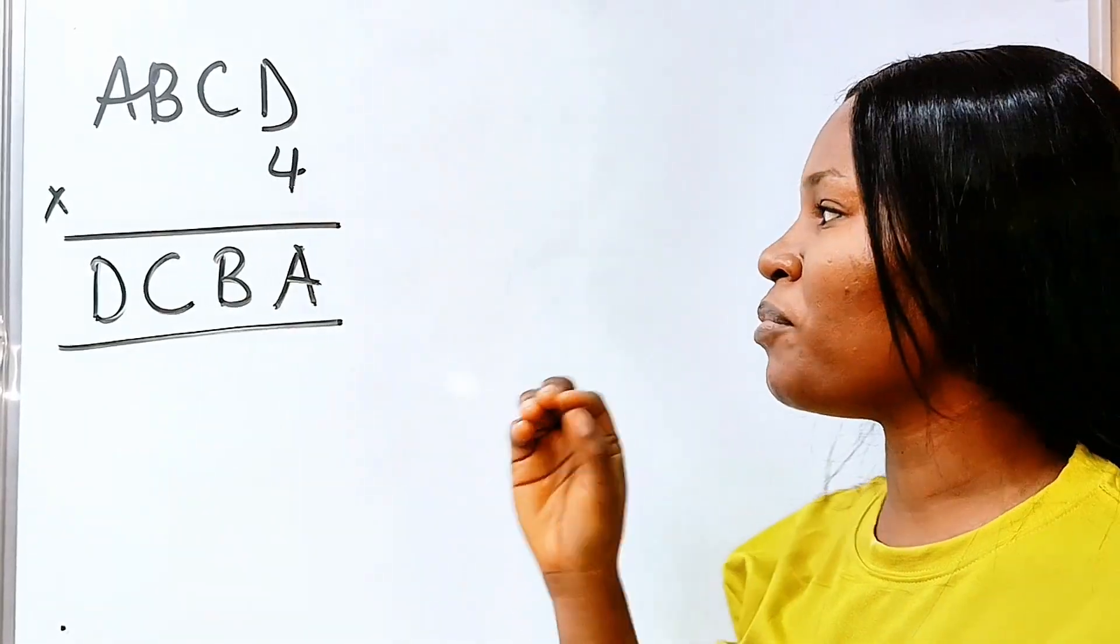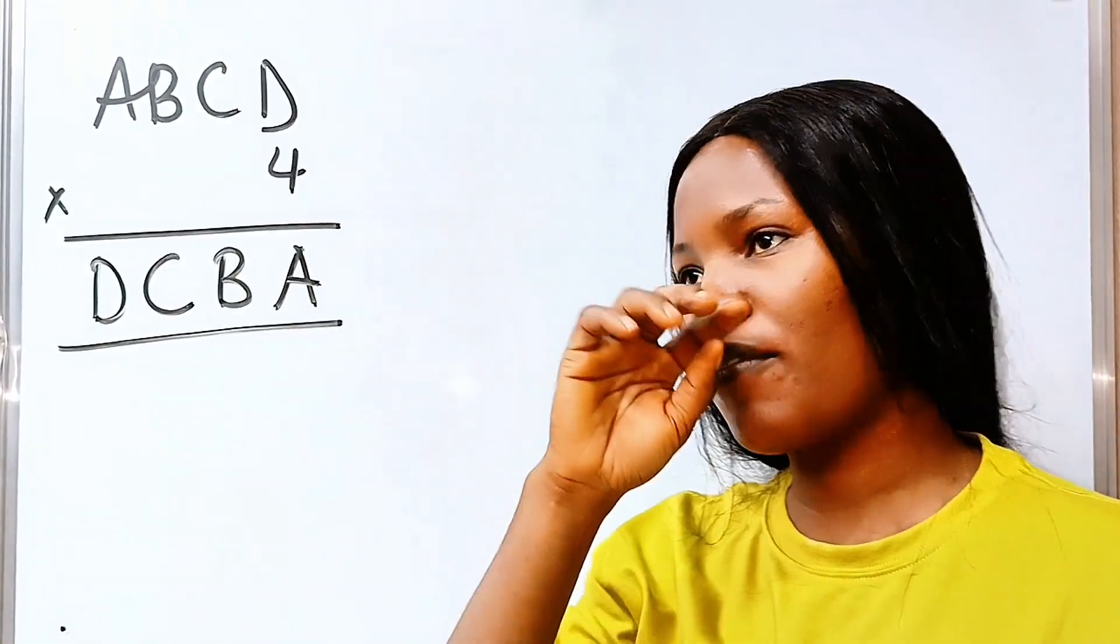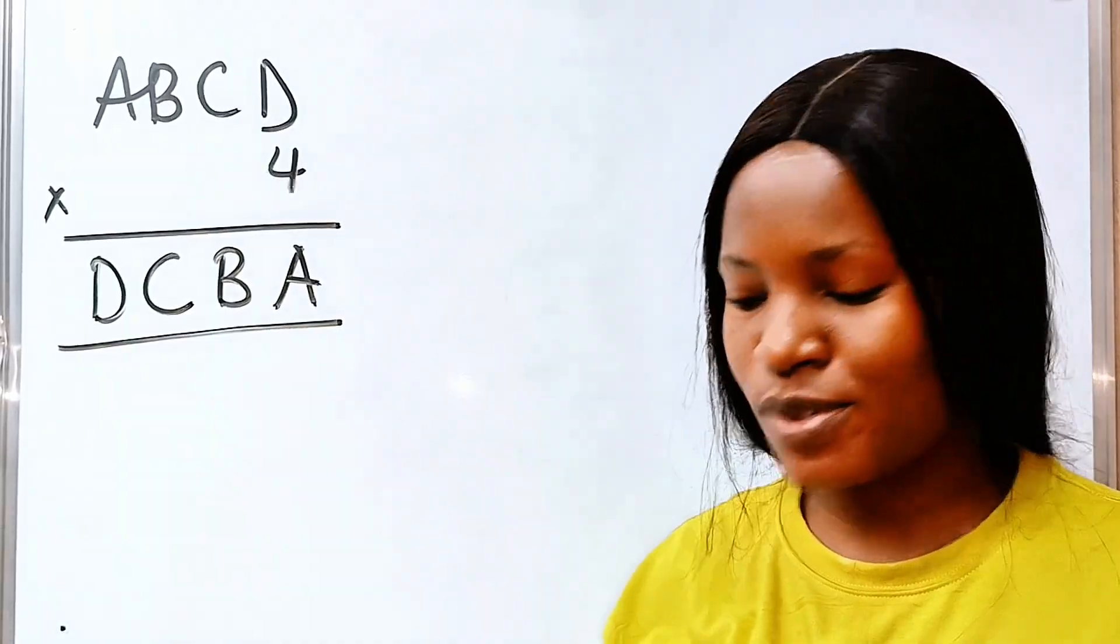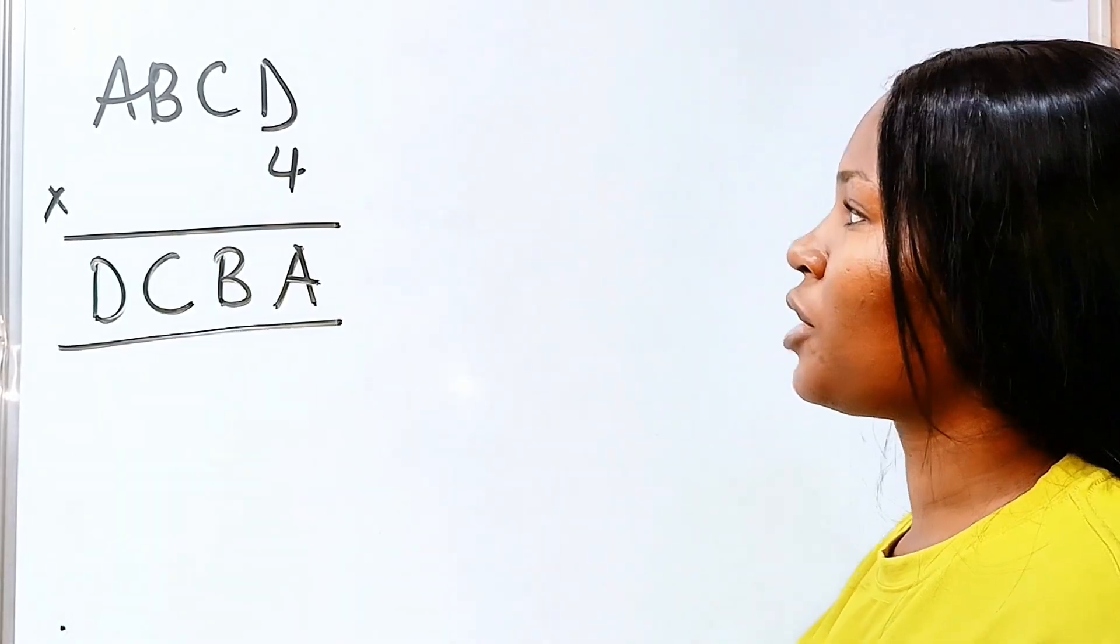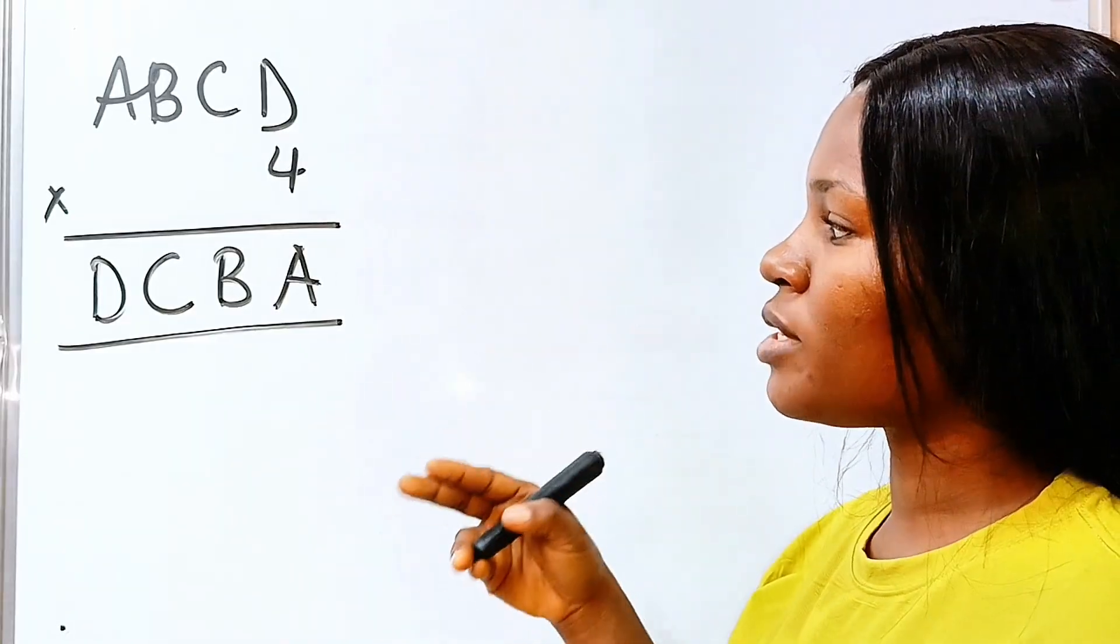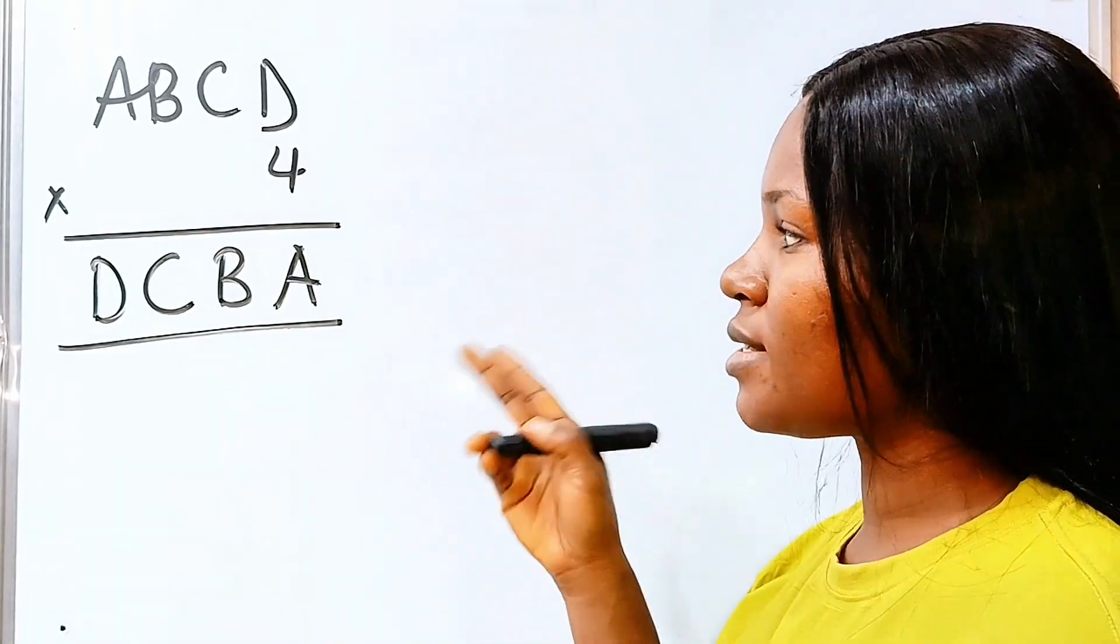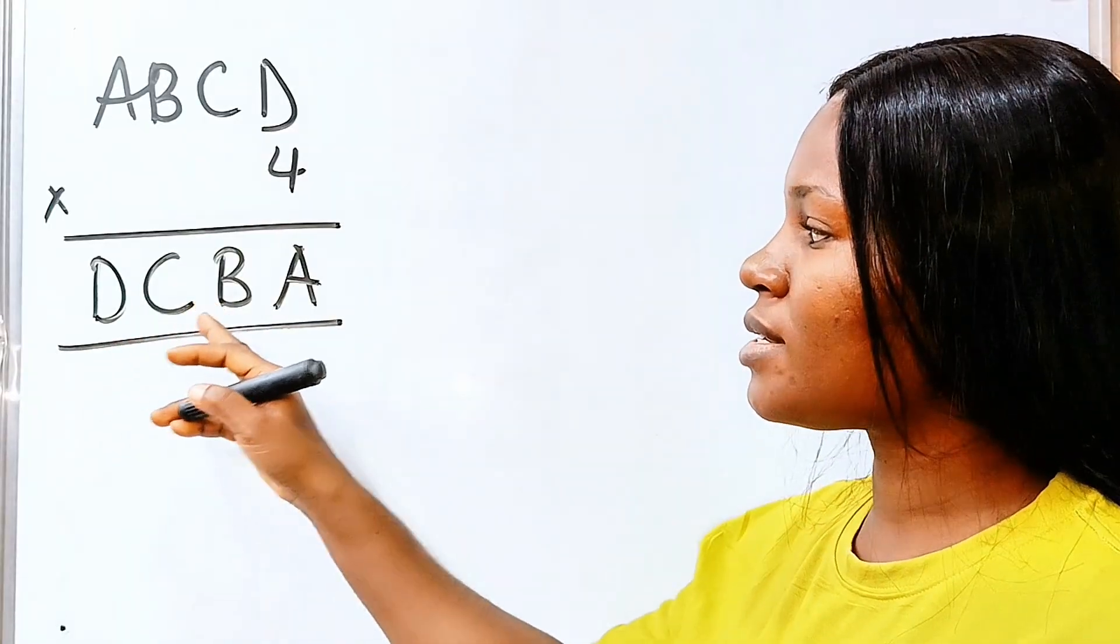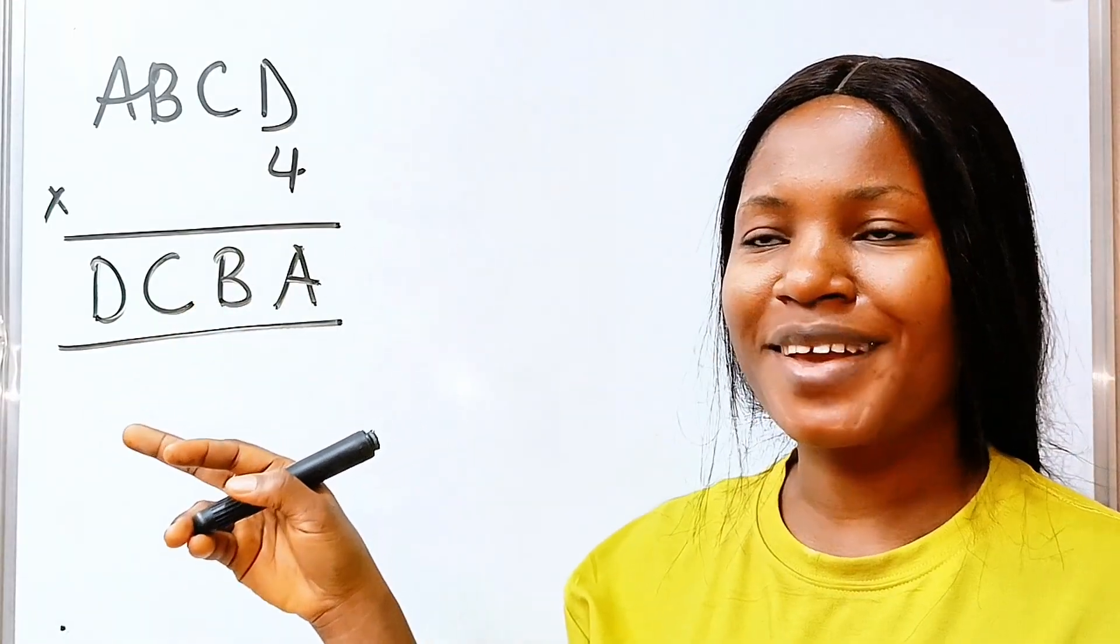This is one of the most difficult puzzles I've ever watched. I saw this on a channel and I'm trying to share it with you guys. Welcome back to my channel. So we are told that A, B, C, D multiplied by 4 is equal to D, C, B, A and we are asked to find the values of D, C, B and A.